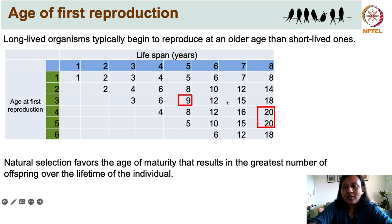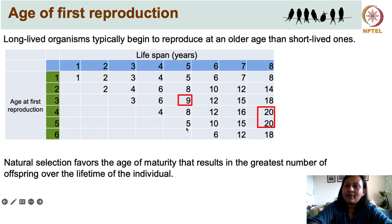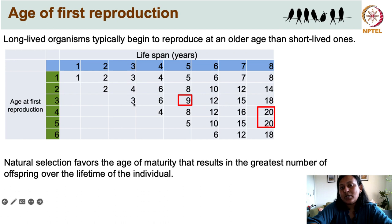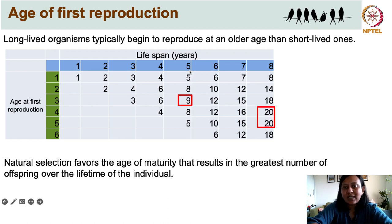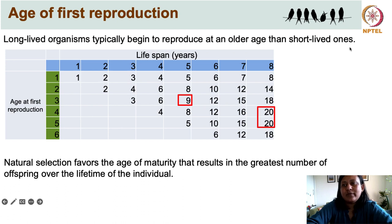For instance, an individual that lives for eight years can achieve a maximum reproductive success of 20 offspring if it starts reproducing at four or five years of age. In contrast, an individual which lives for just five years should ideally start reproducing at age three to achieve the maximum reproductive output of nine possible for that lifespan. In general, long-lived organisms typically begin to reproduce at an older age than short-lived ones, as evidenced through this hypothetical example.